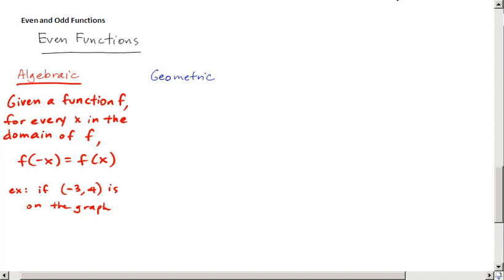So basically what this means is this. If negative 3, 4 is a point on the graph, that means that 3, 4 has to be as well. And this has to be true for every single x value that you can use for the function f.